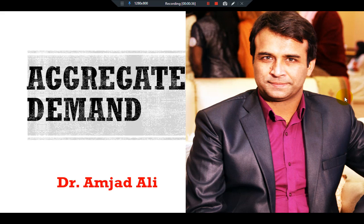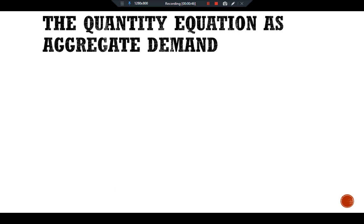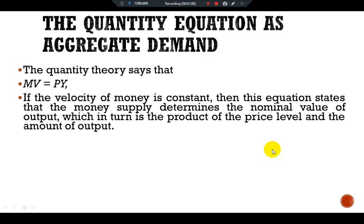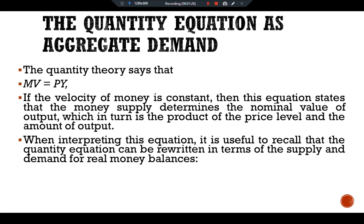We examine the theory of aggregate demand in our coming videos, but here we use the quantity theory of money to provide a simple, although incomplete, derivation of the aggregate demand curve. The quantity equation as aggregate demand: the quantity theory says that MV = PY, where M is the money supply, V is the velocity of money, P is the price level, and Y is the amount of output. If the velocity of money is constant, this equation states that money supply determines the nominal value of output, which is the product of the price level and output.